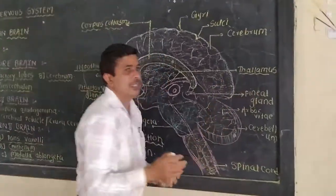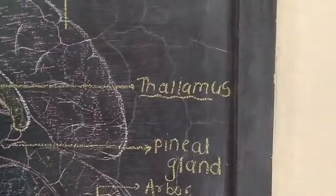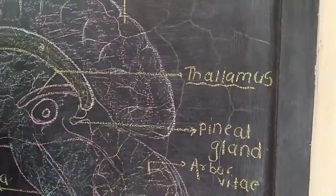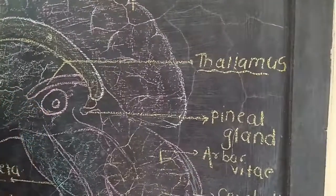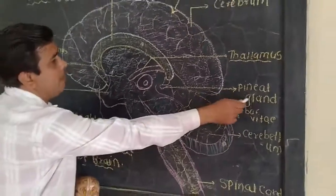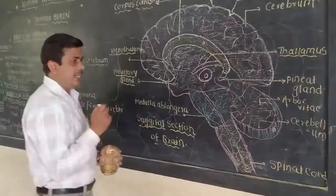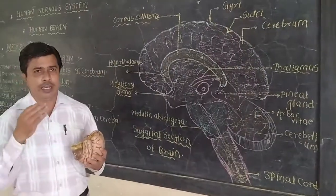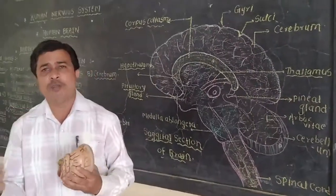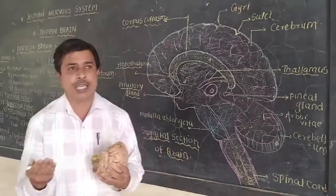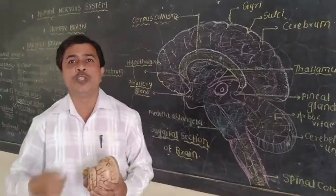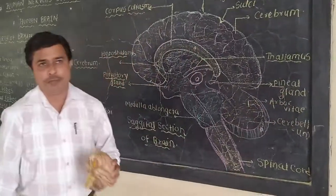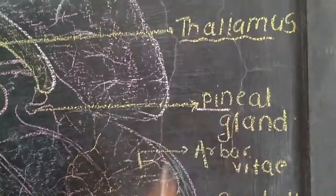The thalamus forms the two lateral walls of the diencephalon. The thalamus region contains the pineal gland, which is much more important in humans because it secretes important hormones such as serotonin — the sleep-inducing hormone, which induces sleep. The pineal gland also stimulates reproductive hormones, making it very important.